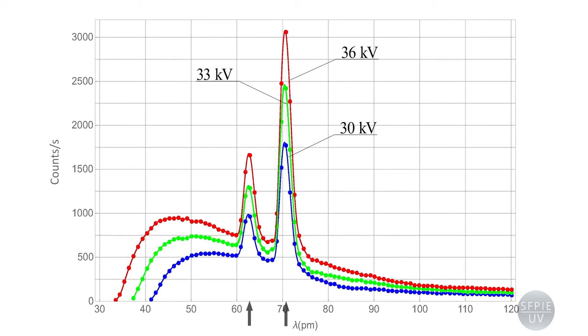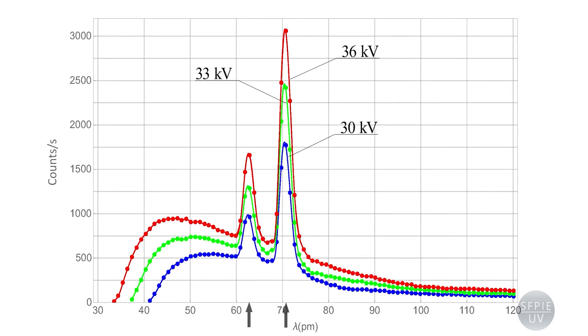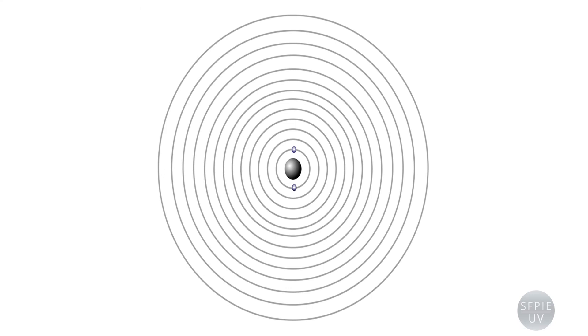These peaks can be explained by atomic transitions in the anode, which in our case is made of molybdenum. To visualize the atomic structure of molybdenum, we will use a Bohr model. When an accelerated electron hits the atom with sufficient energy, an atomic electron at a lower energy level may be expelled from the atom leaving a hole. Then an atomic electron from a higher energy level falls spontaneously to the lower energy level emitting a photon.